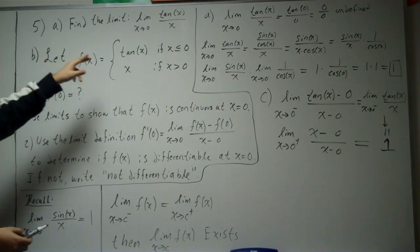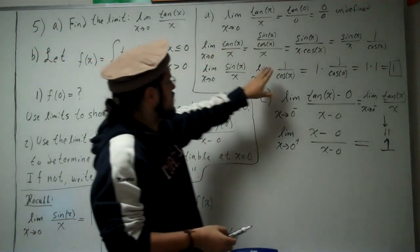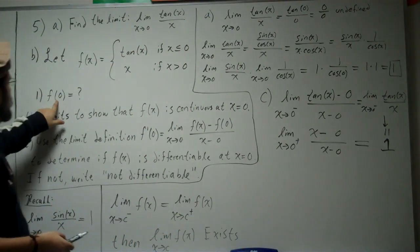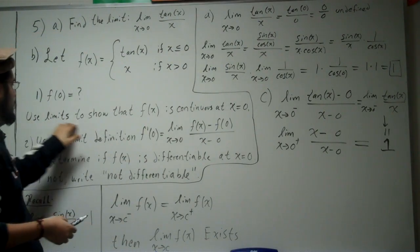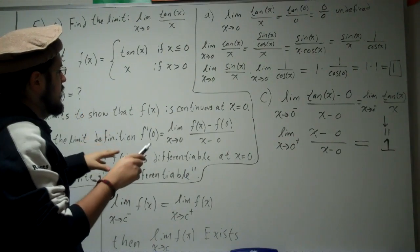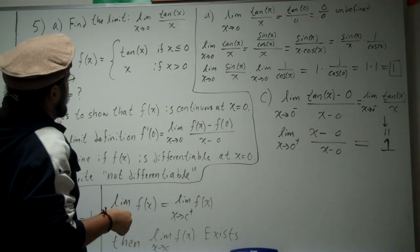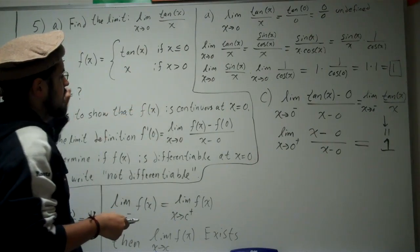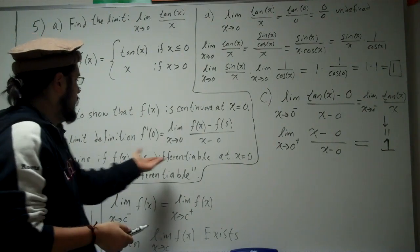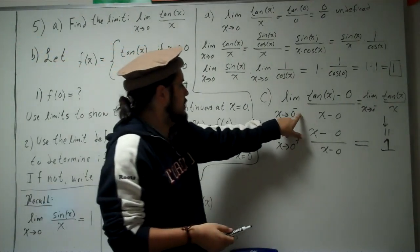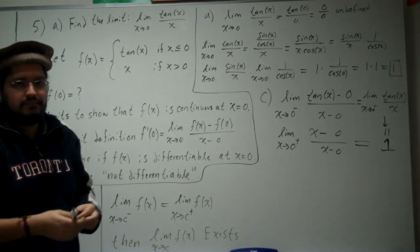To recap: For part a, we recalled that sin(x)/x → 1 and used algebra to show the limit of tan(x)/x is 1. For part b, we computed f(0) = tan(0) = 0, then used one-sided limits — both approaching 0 — to confirm continuity. For part b-2, using the derivative limit definition, both the left- and right-hand limits equal 1, so f(x) is differentiable at x = 0.